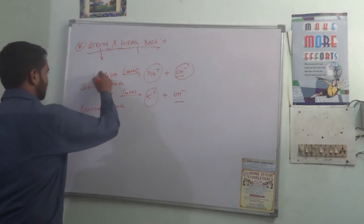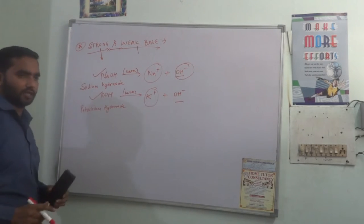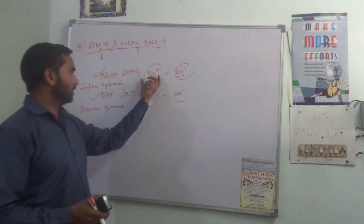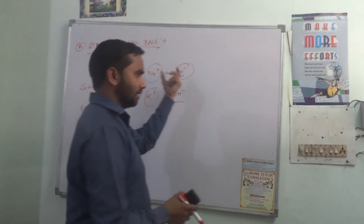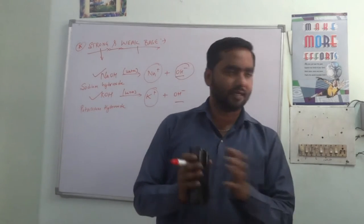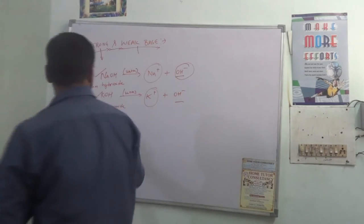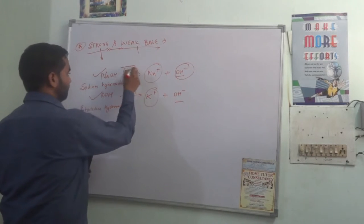Strong base is the example of sodium hydroxide and potassium hydroxide. In which it is sodium ion, Na+ ion, and OH- ion. When they are combined in water.